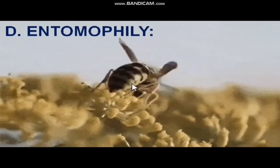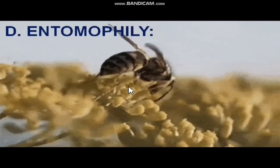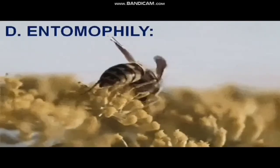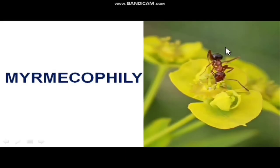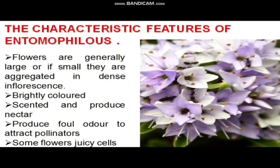The next is entomophily — insects which are helpful in pollination. Common insects we know are bees, but all insects are also helpful in pollination. When ants are specifically involved in pollination, that alone is called myrmecophily. For these flowers, the characteristics are: flowers should be generally larger, or if smaller they should represent a huge bunch — that is, an inflorescence — so that these insects get a huge amount of nectar. The flower should be brightly colored and also produce a good scent.